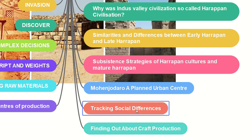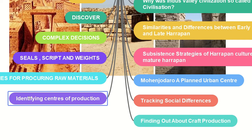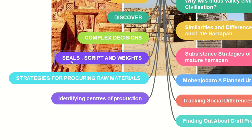Then we will move on to track social differences, find out about craft production, identify the centers of production, and look at the strategies used for procuring raw materials. We will also cover seals, scripts, and weights.